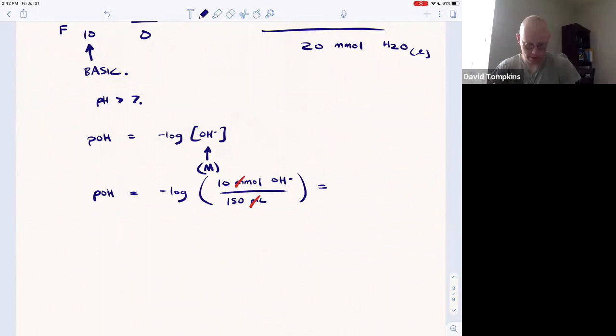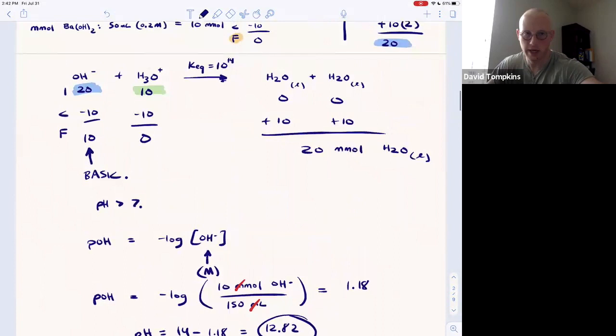And that's going to give 1.18. Finally, the pH and the pOH add to 14, so pH is equal to 14 minus 1.18, or 12.82 - a highly basic pH, which is what we anticipated with having excess strong base hydroxide.